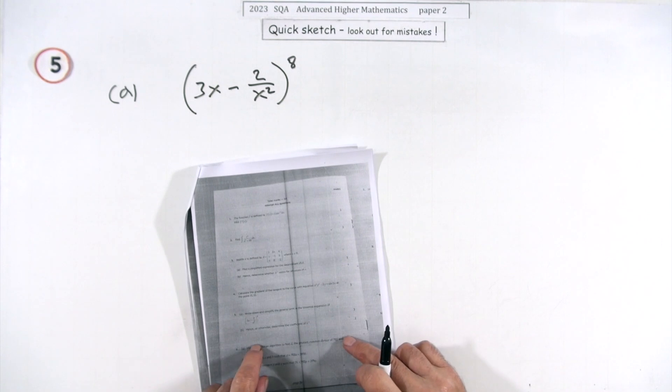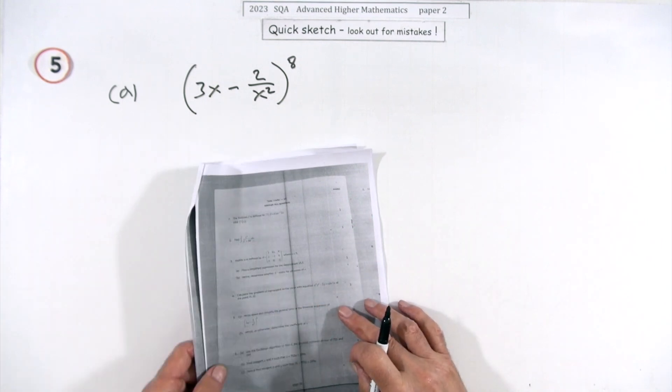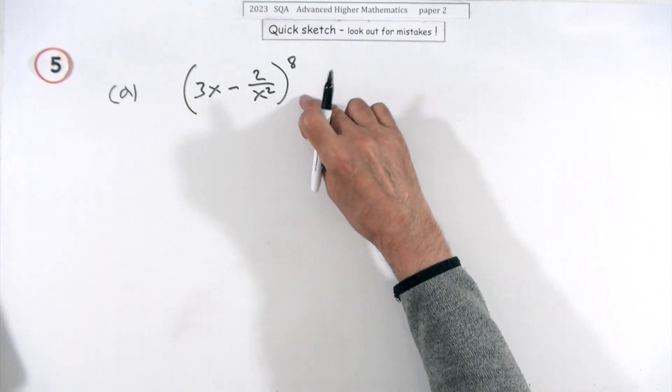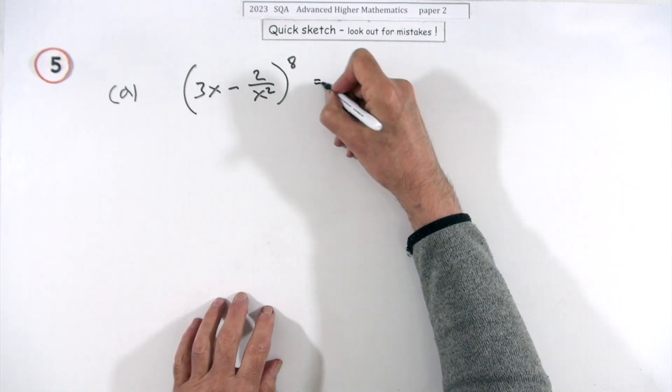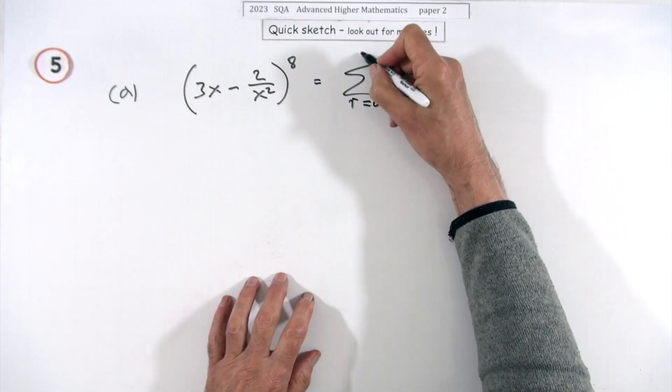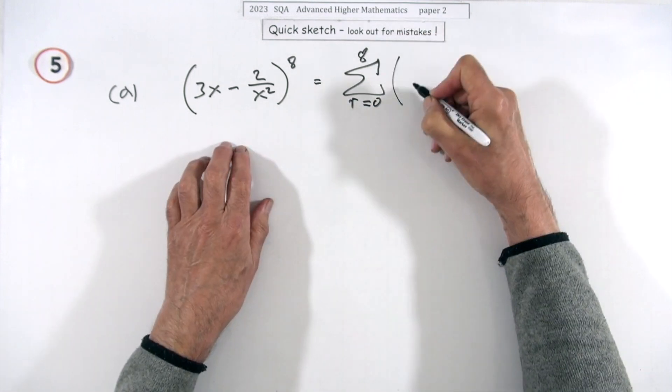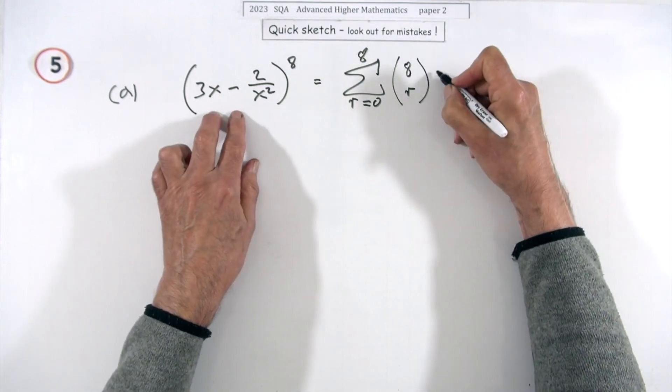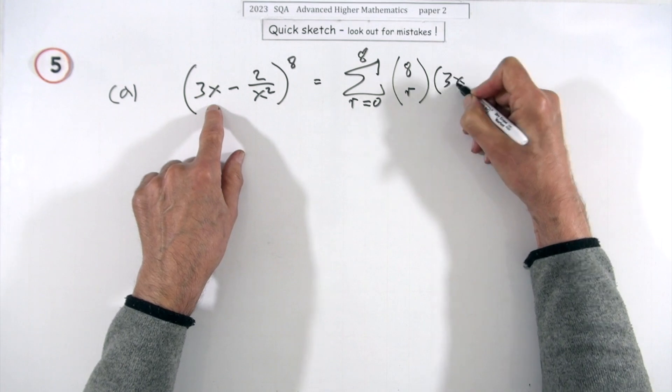It's that when the general term and find a particular coefficient. Write down and simplify the general term for three marks in the binomial expansion of this. Well that would produce this sum of terms going from r is zero up to eight.